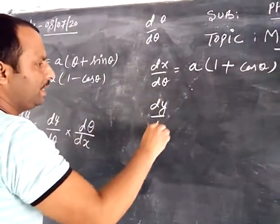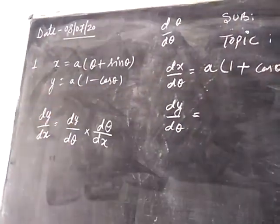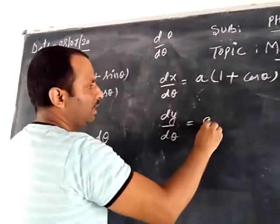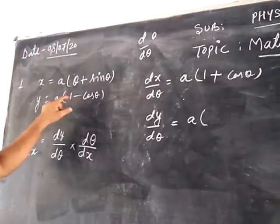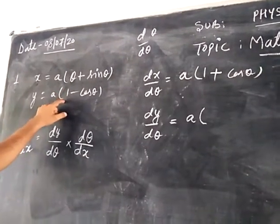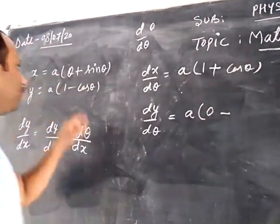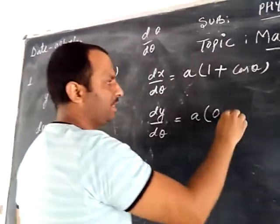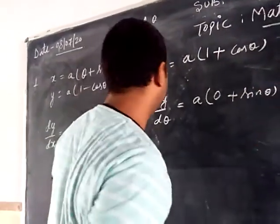dy by d theta: y is also dependent upon theta. So dy by d theta — the constant 1 has differentiation zero, minus the differentiation of cos theta which is minus sin theta, so it will become plus sin theta.